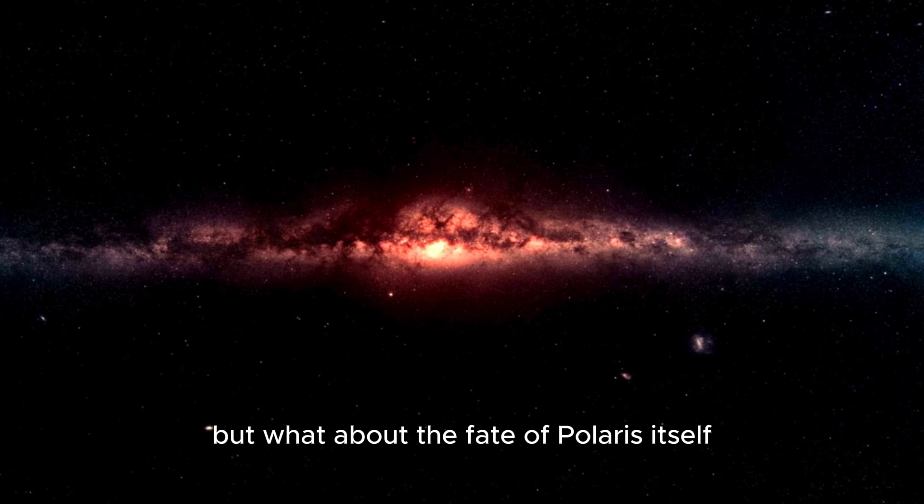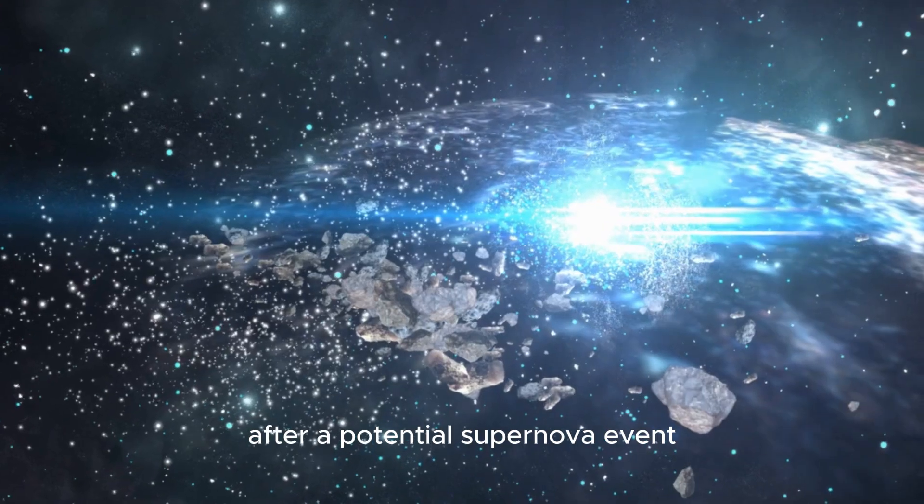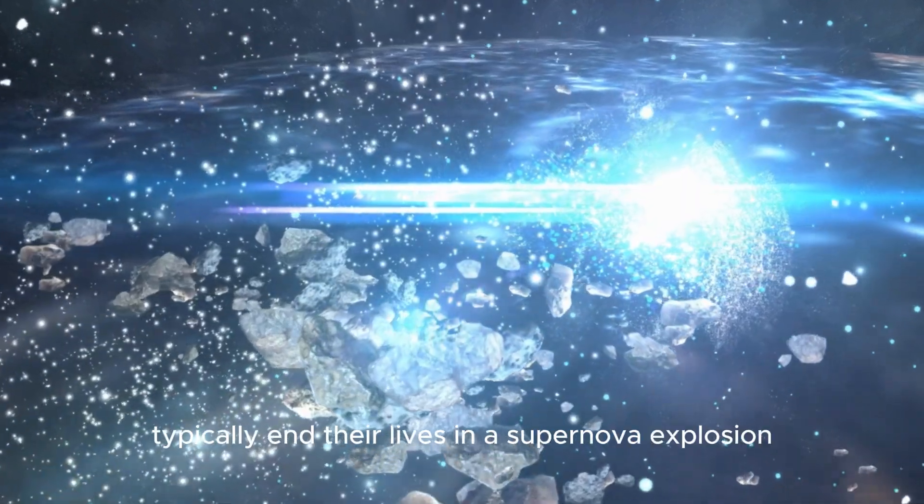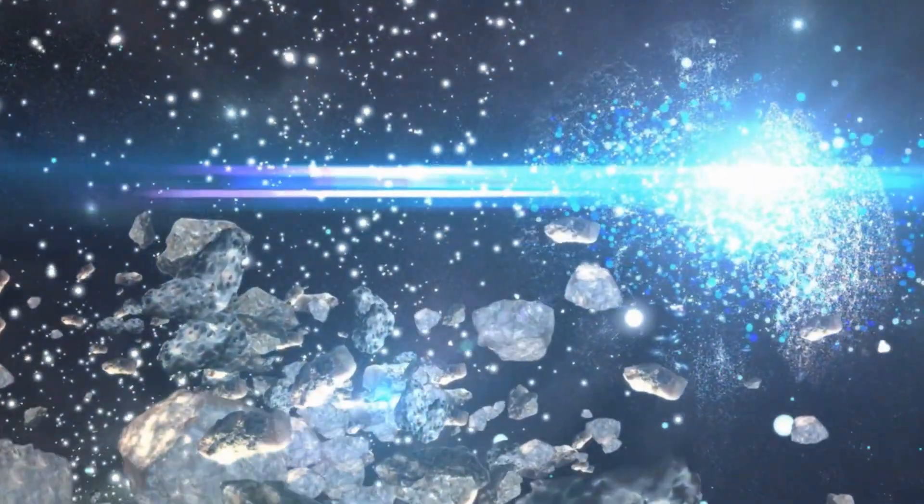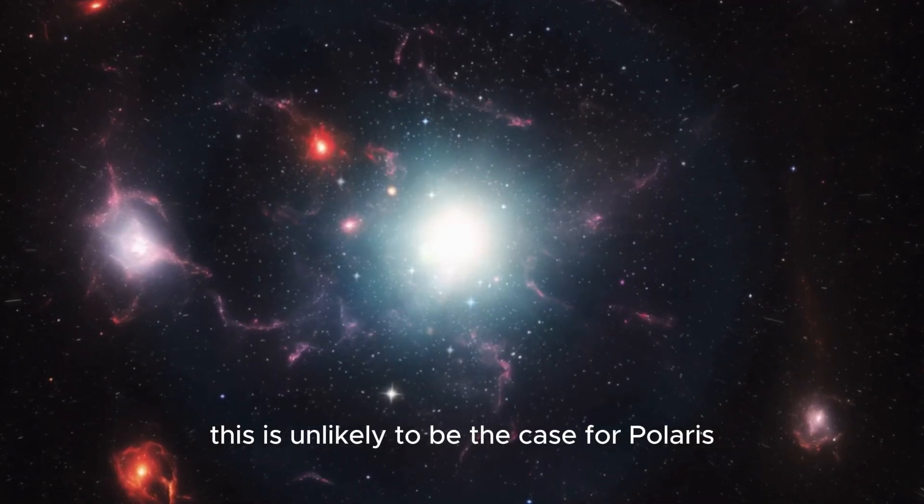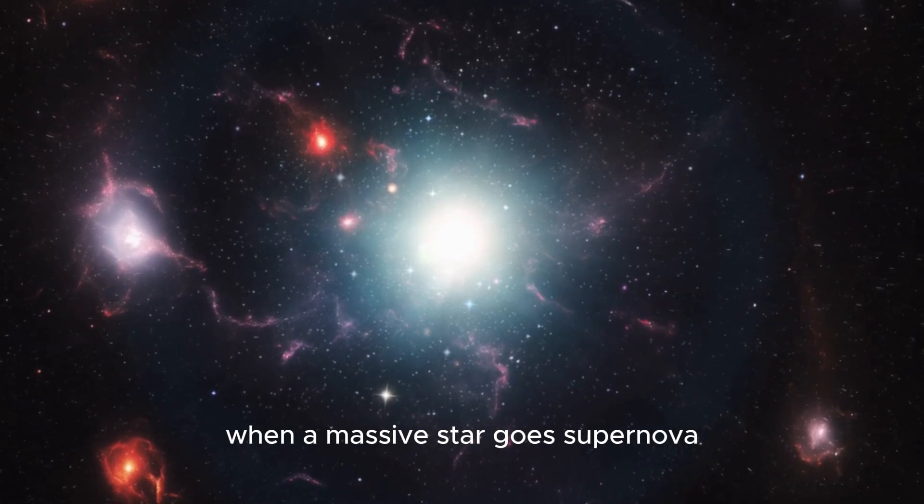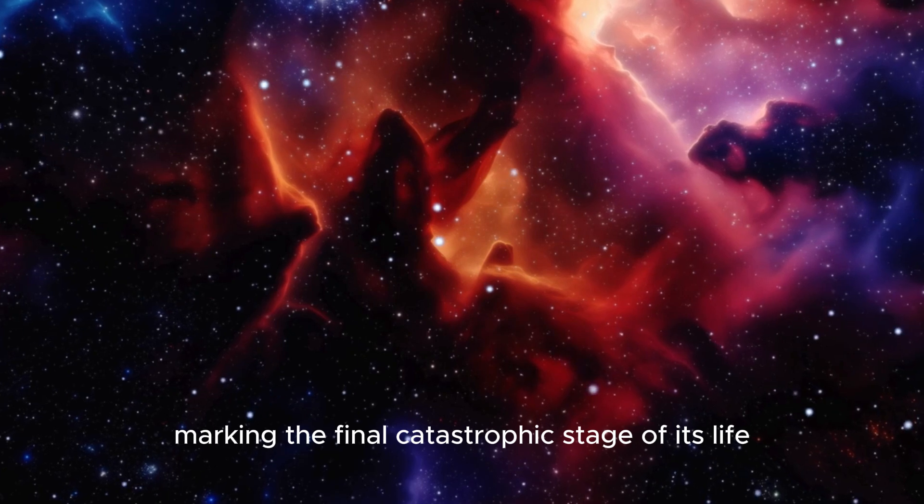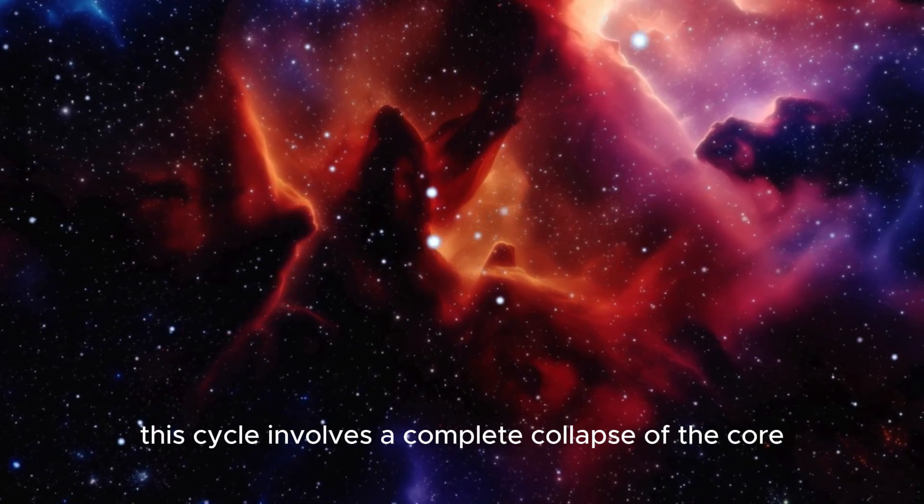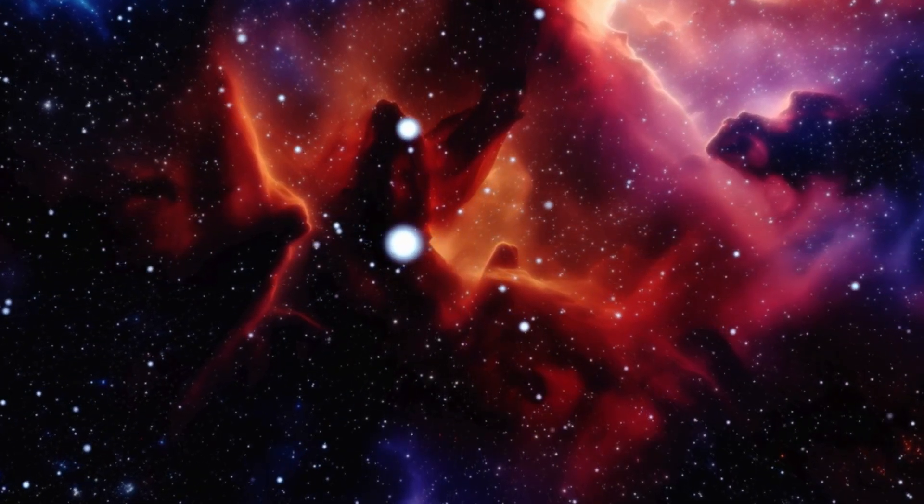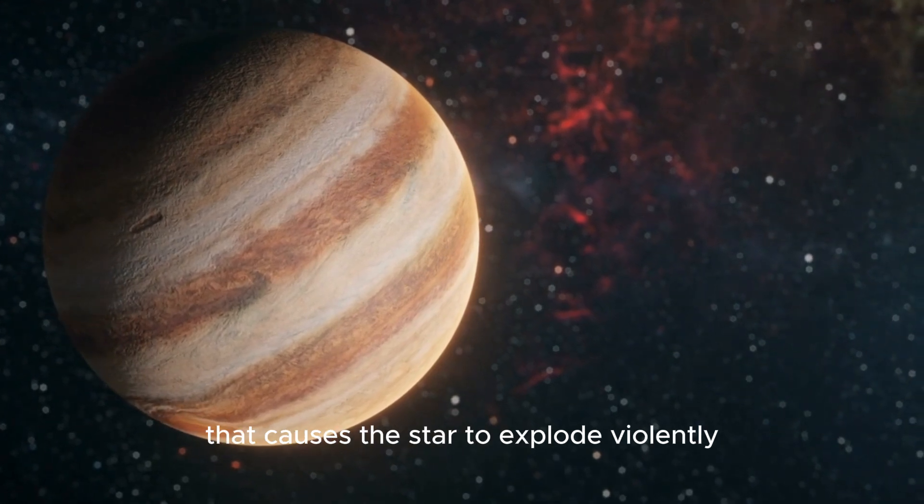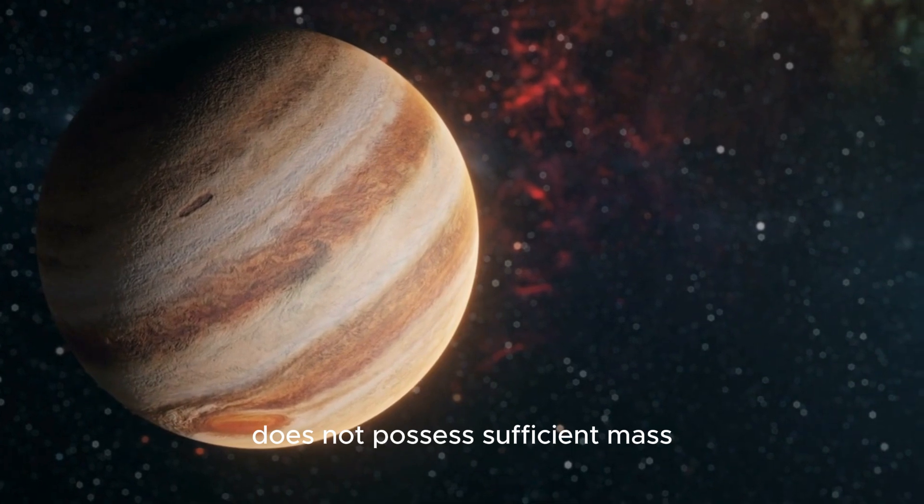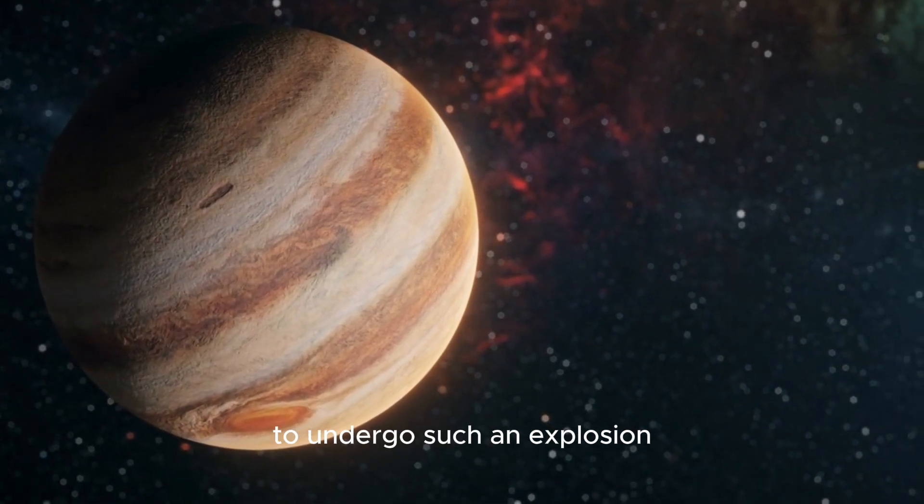But what about the fate of Polaris itself after a potential supernova event? It's important to clarify that while massive stars typically end their lives in a supernova explosion, this is unlikely to be the case for Polaris. When a massive star goes supernova, a tremendous explosion occurs within it, marking the final catastrophic stage of its life. This cycle involves a complete collapse of the core, triggering a powerful shockwave that causes the star to explode violently. However, Polaris does not possess sufficient mass to undergo such an explosion.